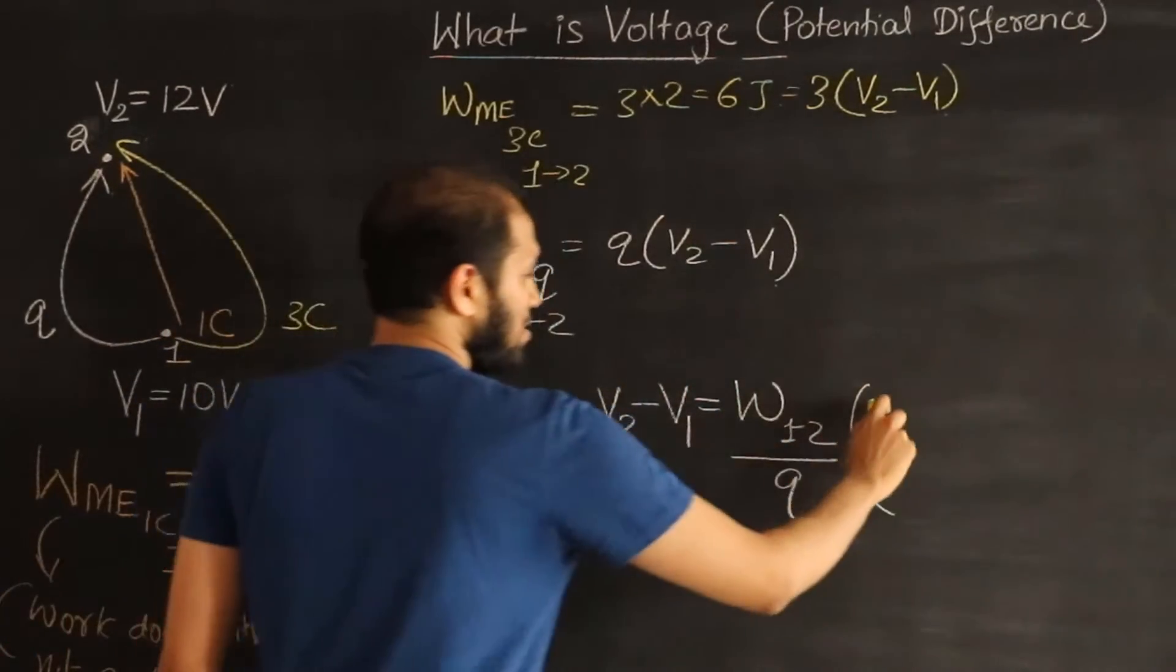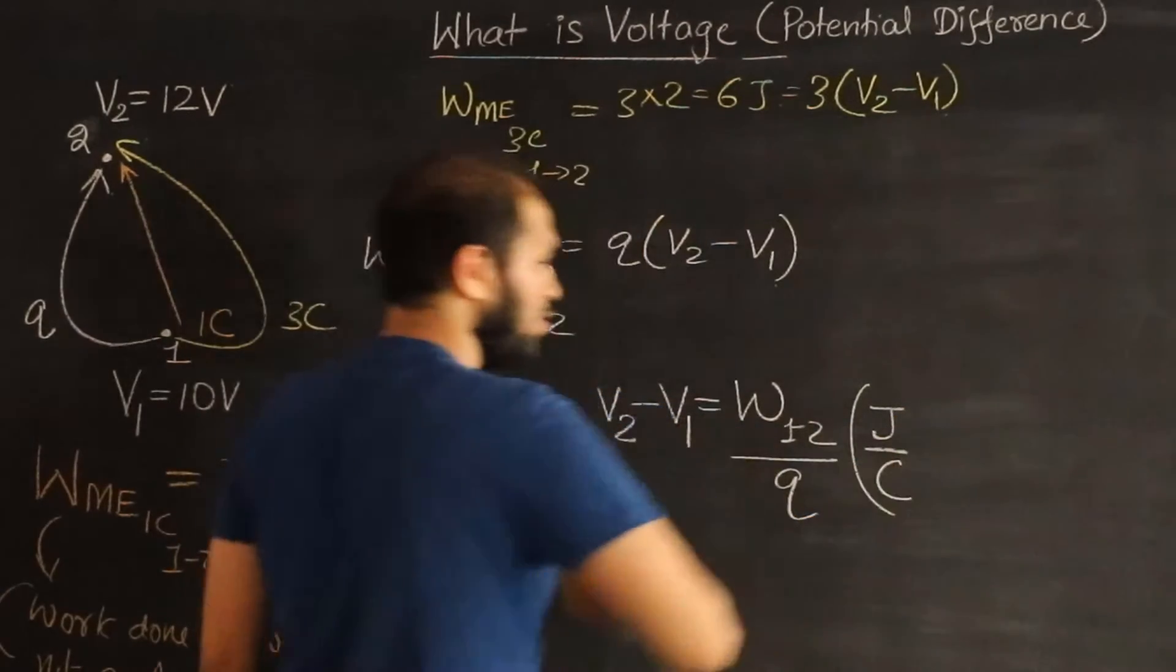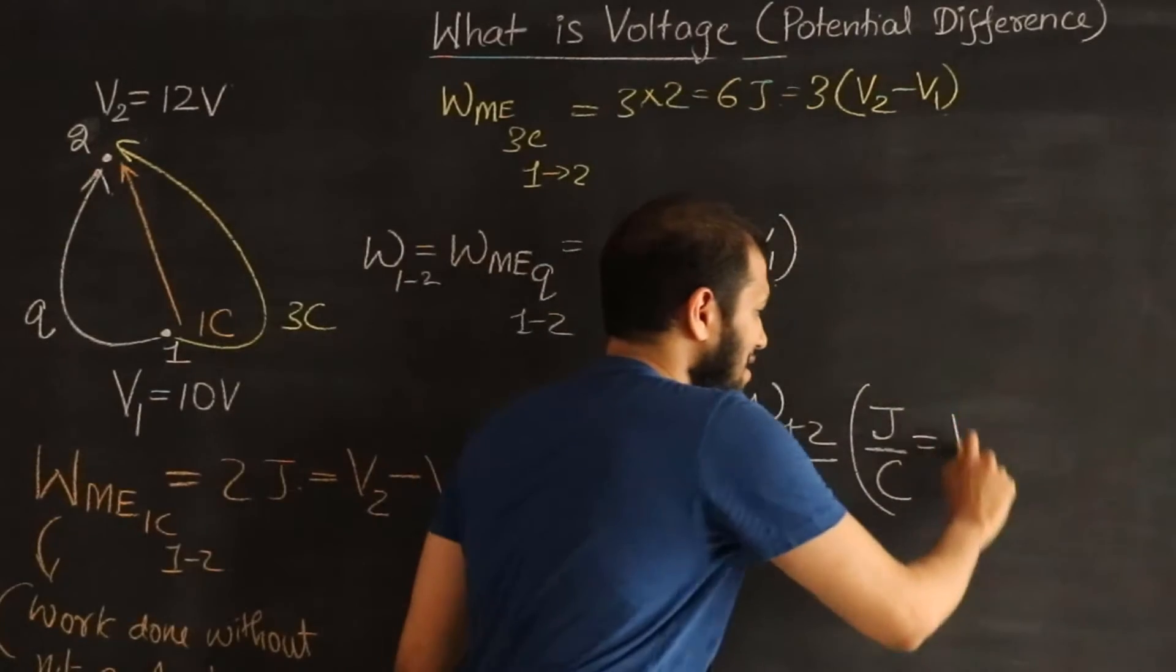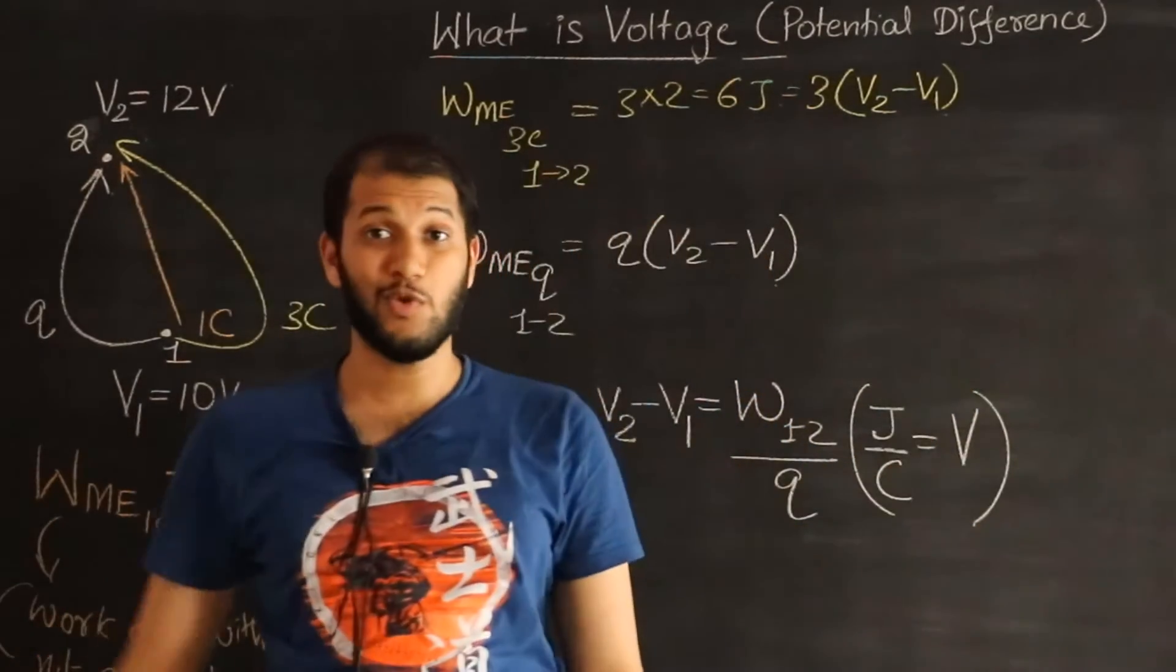So the unit turns out to be joules per coulomb. And thus joules per coulombs is what we call as volts.